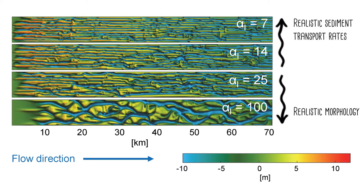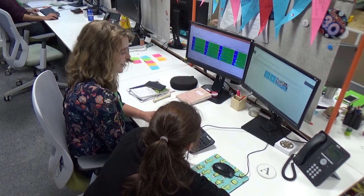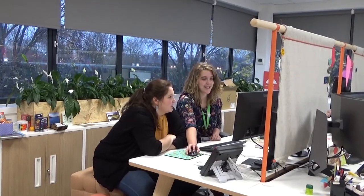Therefore, you can either model realistic sediment transport rates or a realistic morphology. Present calibration practice may cause an order of magnitude error in either morphology or in the rate of morphological change.